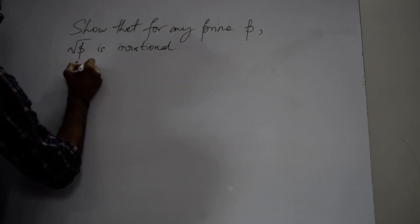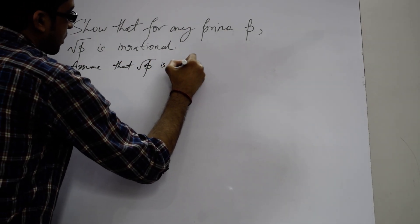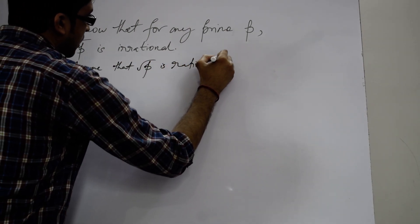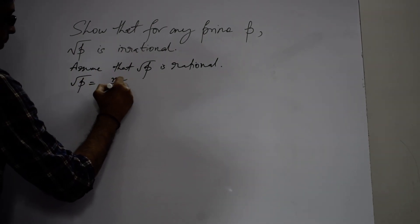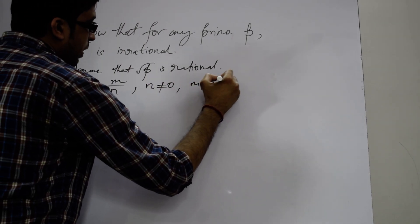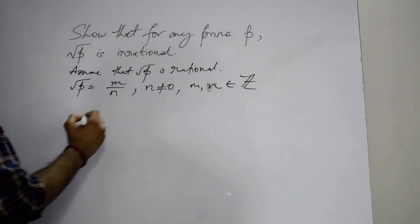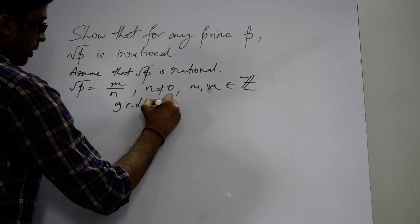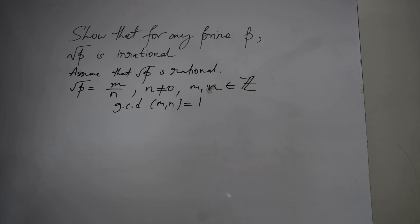Assume that root p is rational. Now from the very definition of a rational number, we can say that root p can be written in the form m by n, where n is non-zero and both m and n are from the set of integers. Also, GCD of m and n will be equal to 1; that is to say, m and n have no other common factor except 1.